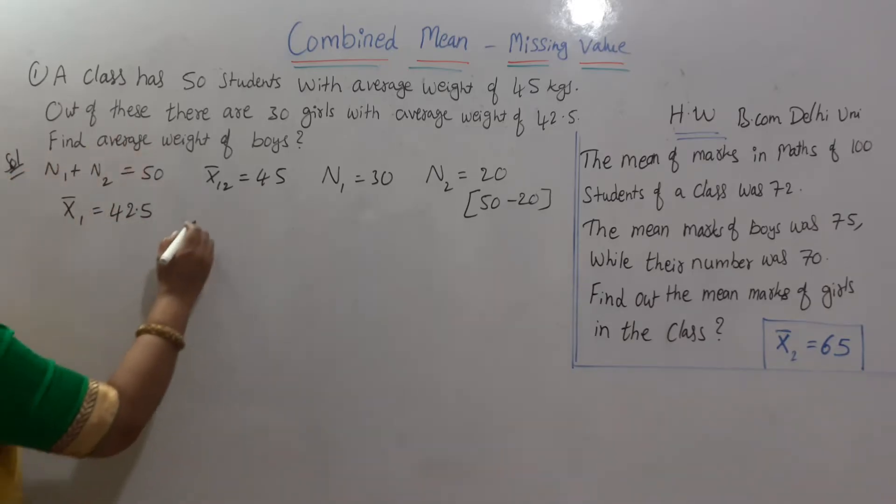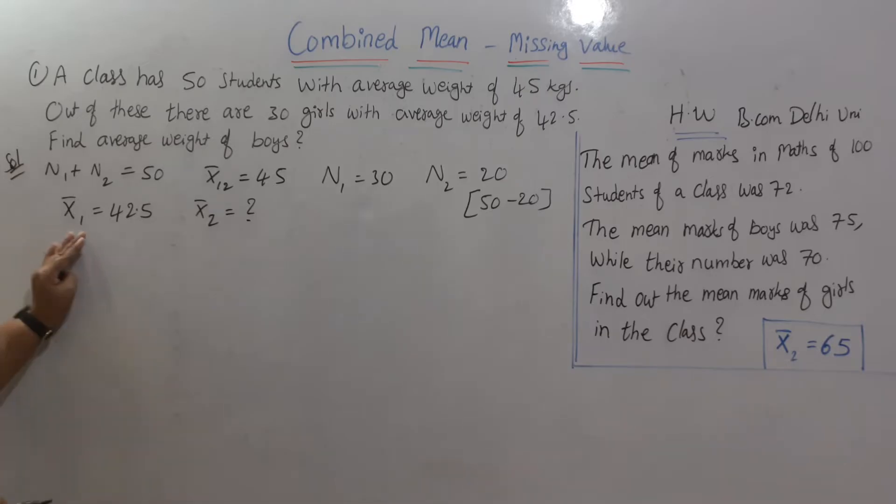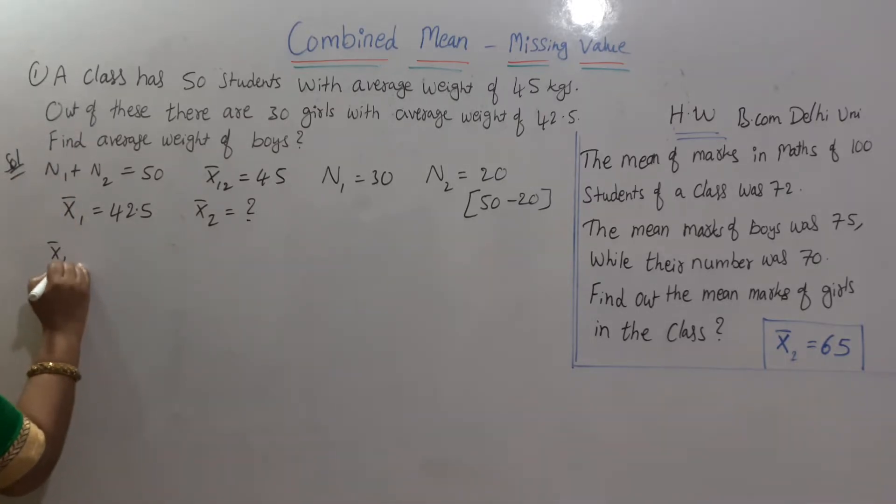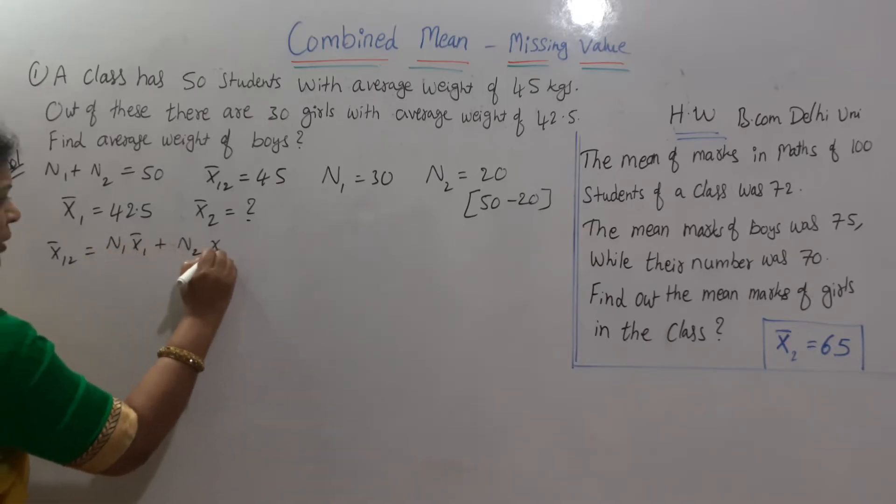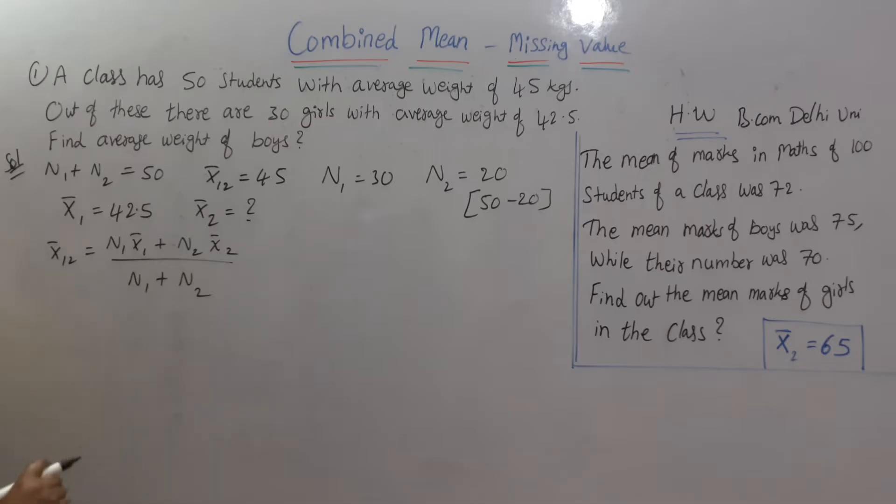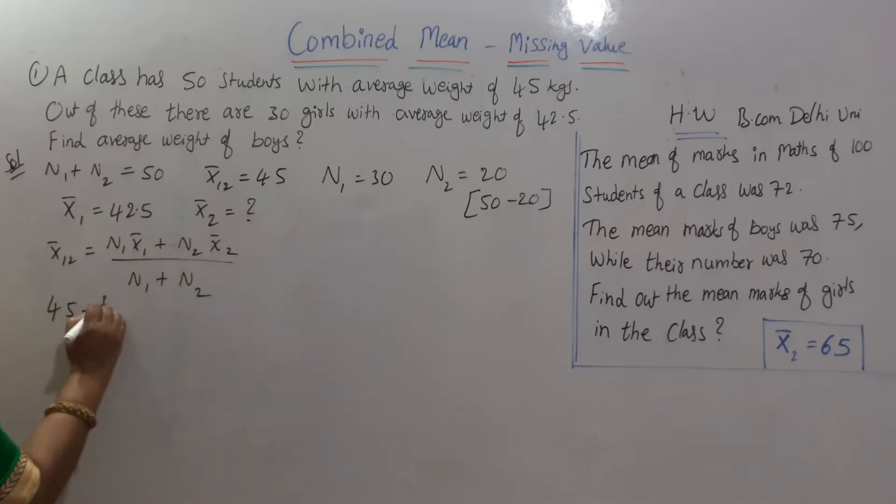Find average weight of boys. We have to calculate X bar 2. Average weight of boys. Average weight of girls is this much. Average weight of boys is how much? You know the formula? First, we will write the formula here. X bar 1,2 is equal to N1 X bar 1 plus N2 X bar 2 by N1 plus N2. If we apply the same formula here, it comes X bar 1,2 is already given to us. Where it is? X bar 1,2 is 45. N1 is here 30. X bar 1 is given 42.5.